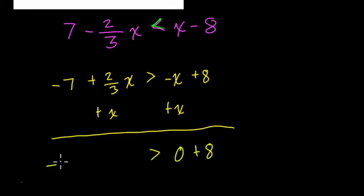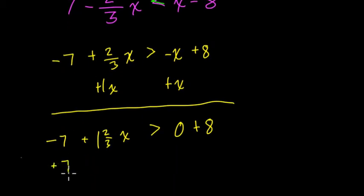On the left-hand side, we still have negative 7, 2/3 plus 1 in a group of x. It's 1 and 2/3 x. Then I'm going to isolate the x term by adding 7 to both sides.